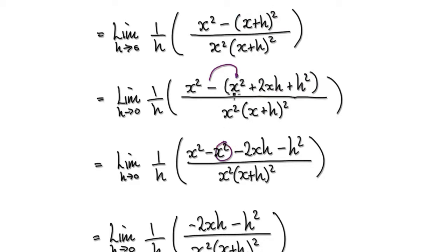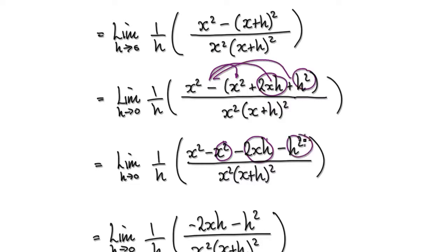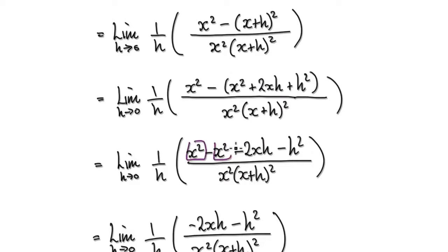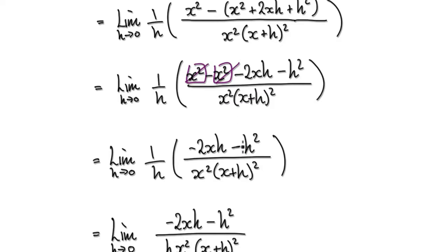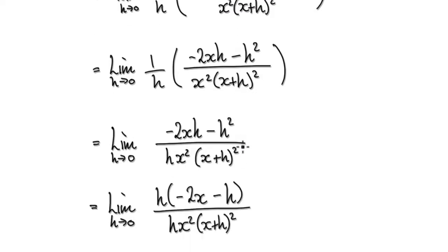When you multiply this out it gives you: this times this gives minus x squared, this times this gives minus 2xh, and then minus h squared. Notice that these two terms are exactly the same so they cancel each other out.